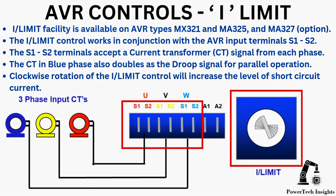AVR controls, I-Limit. I-Limit facility is available on AVR types MX321, MA325, and MA327. The I-Limit control works in conjunction with the AVR input terminals S1, S2. The S1, S2 terminals accept a current transformer (CT) signal from each phase. The CT in the blue phase also doubles as the droop signal for parallel operation. Clockwise rotation of the I-Limit control will increase the level of short circuit current.